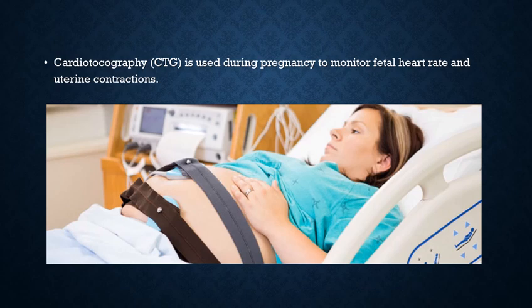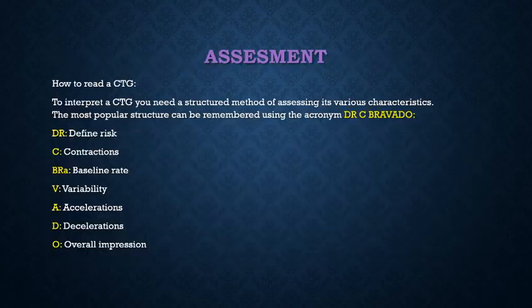This machine has two transducers: one for monitoring fetal heart rate and another for uterine contraction. For assessment of a CTG, we have a common mnemonic: DR C BRA V A D O, so we will not miss any point. DR stands for defined risk, C for contraction, BRA for baseline rate, V for variability, A for acceleration, D for deceleration, and O for overall impression. During assessment of a CTG, we should consider all these points.